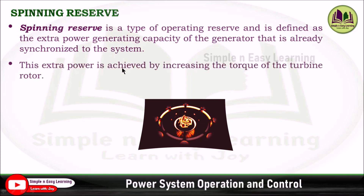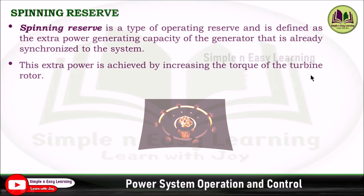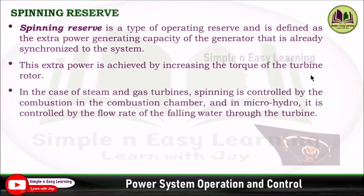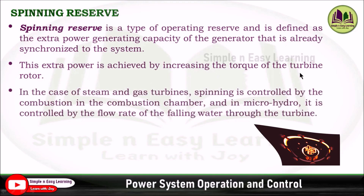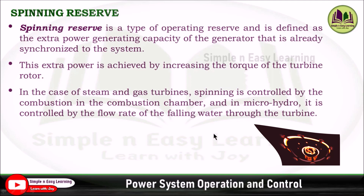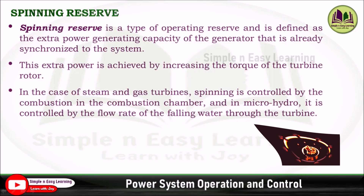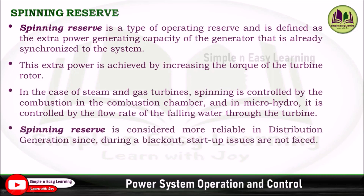This extra power is achieved by increasing the torque of the turbine rotor. In the case of steam and gas turbines, spinning reserve is controlled by combustion in the combustion chamber, and in micro hydro, it is controlled by the flow rate of the falling water through the turbine.